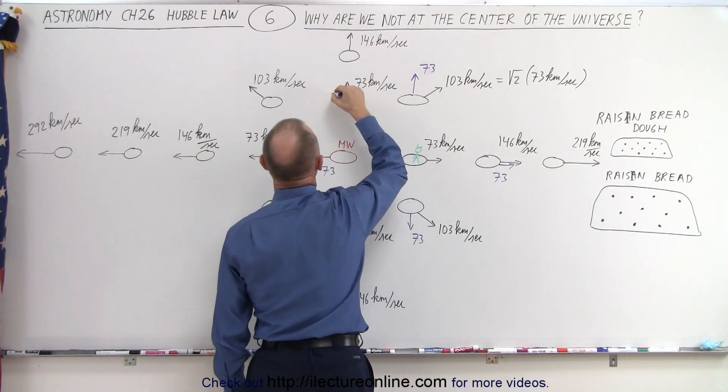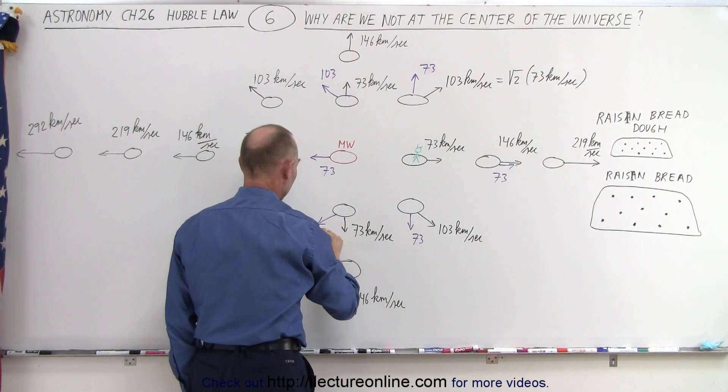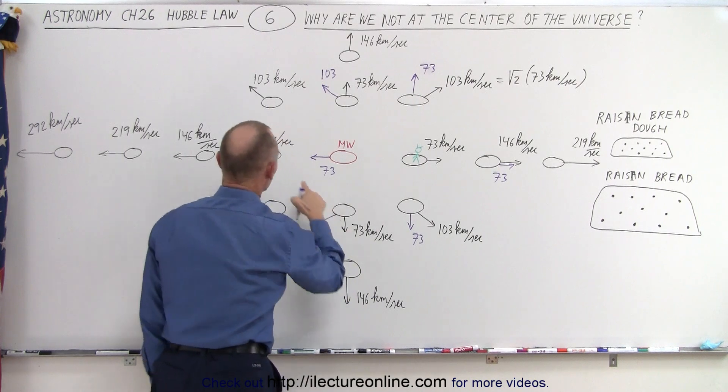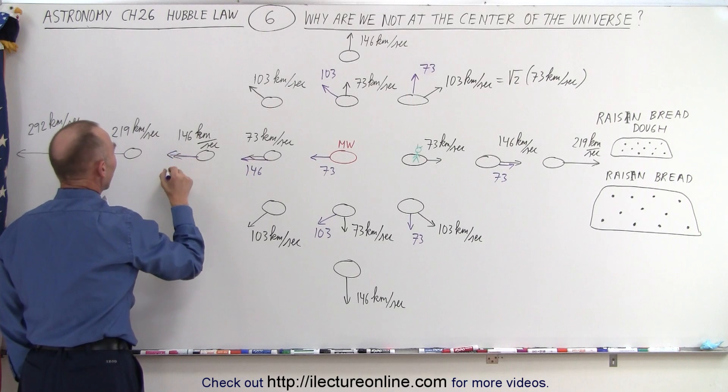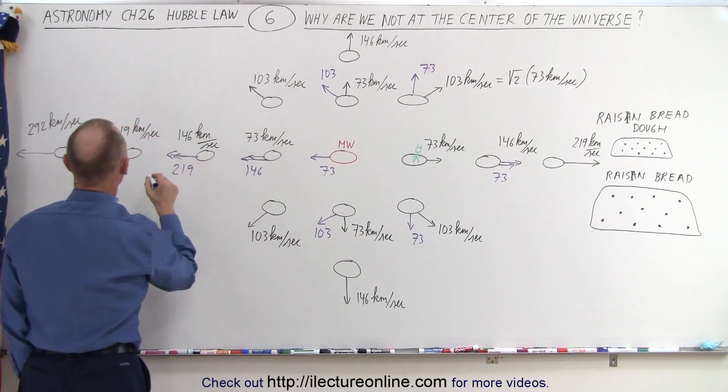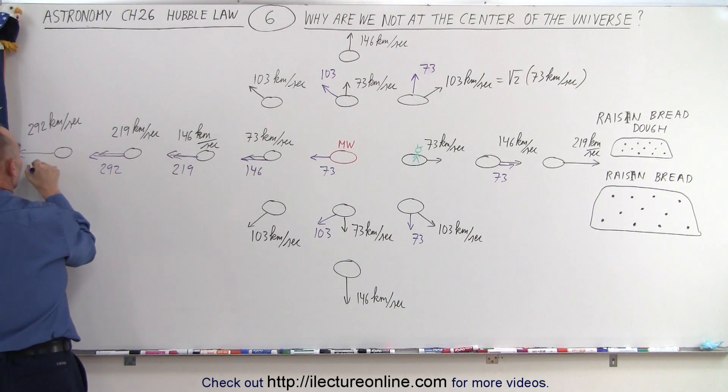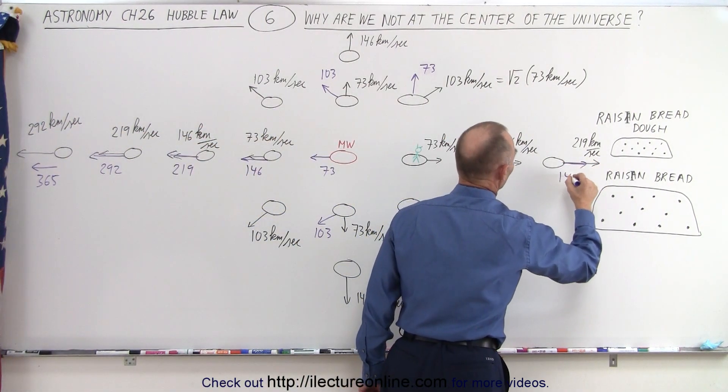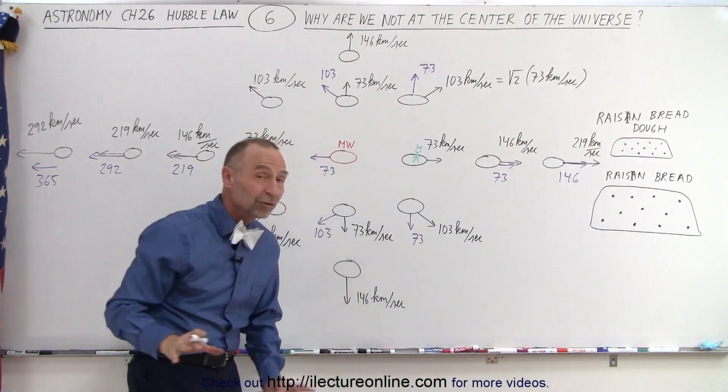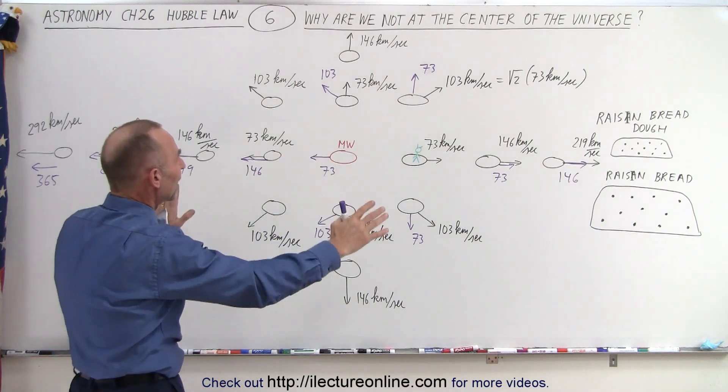And they would look at this galaxy and this one would be moving at 103. They would look at this galaxy, this one would be moving away at 103. And they would look at this galaxy and this one would be moving at 146. And this one would be moving at 219. And this one would be moving at 292. And this one would be moving at, let's say, 365. And they look in this direction and this one would be moving this way at 146 so you can see that from their vantage point the whole universe would be moving away from them in the exact same ways it appears that the whole universe is moving away from us.